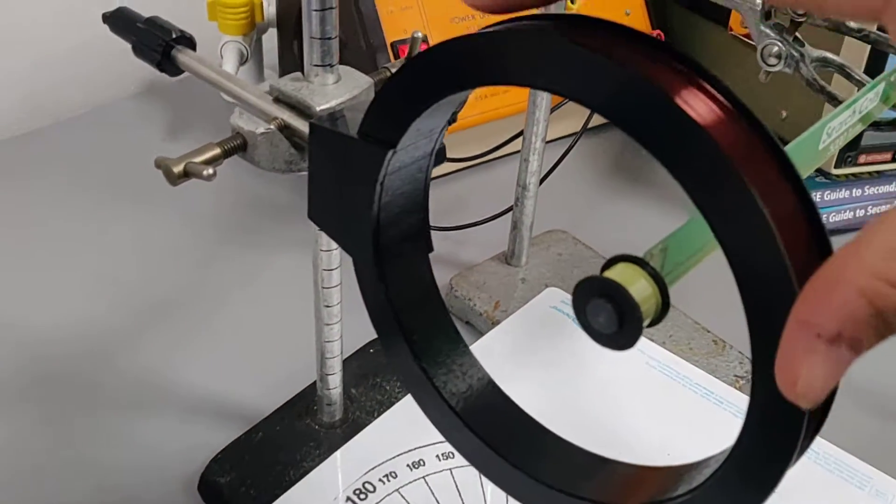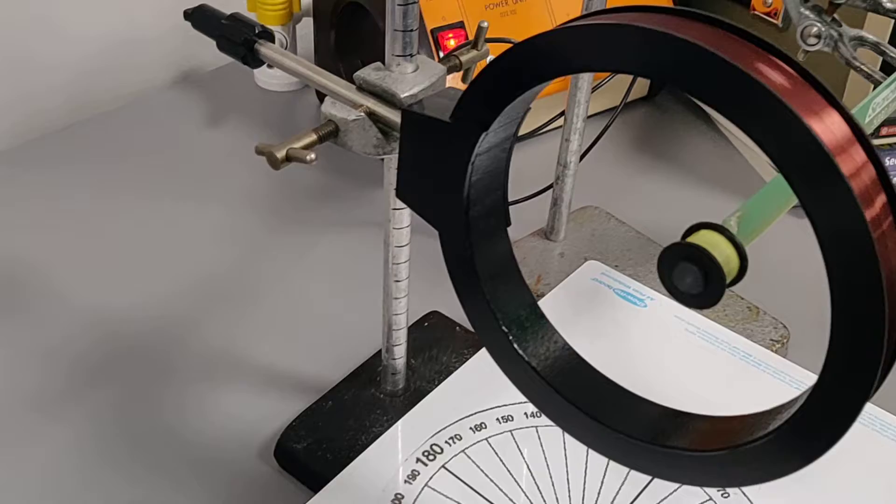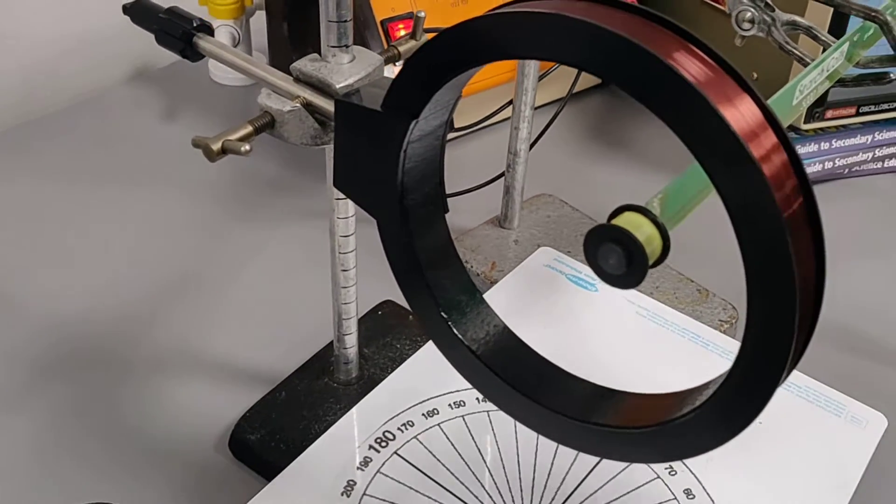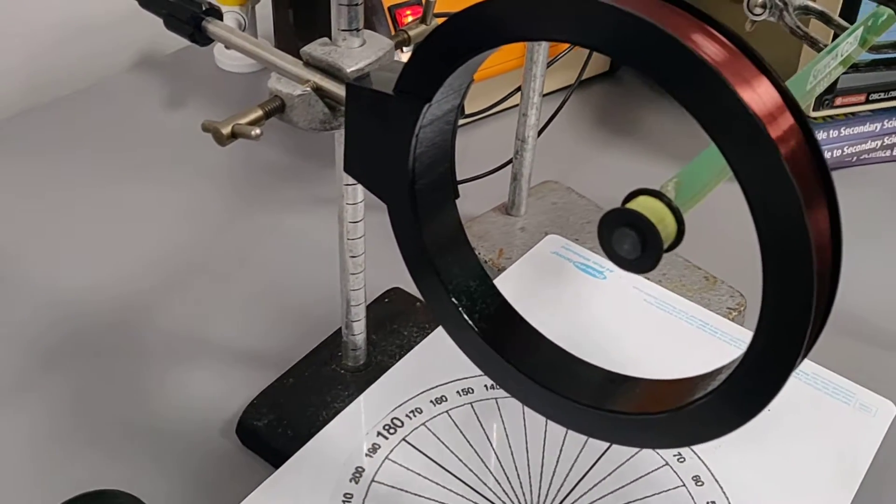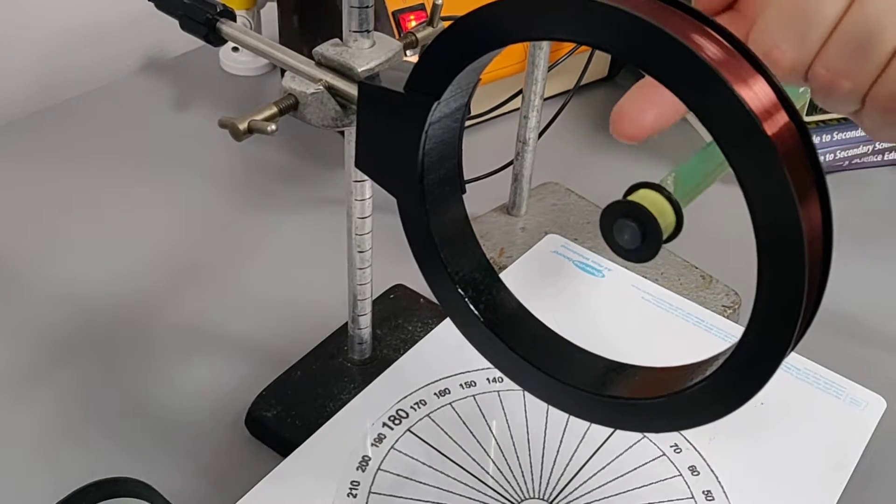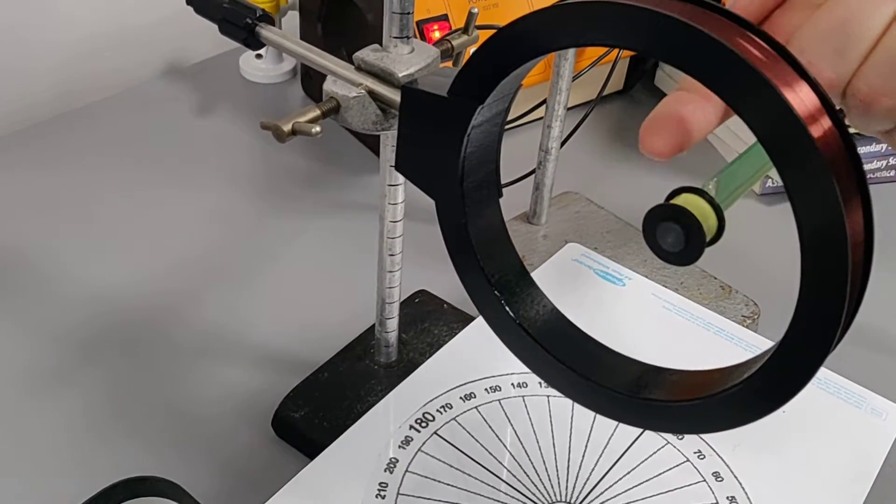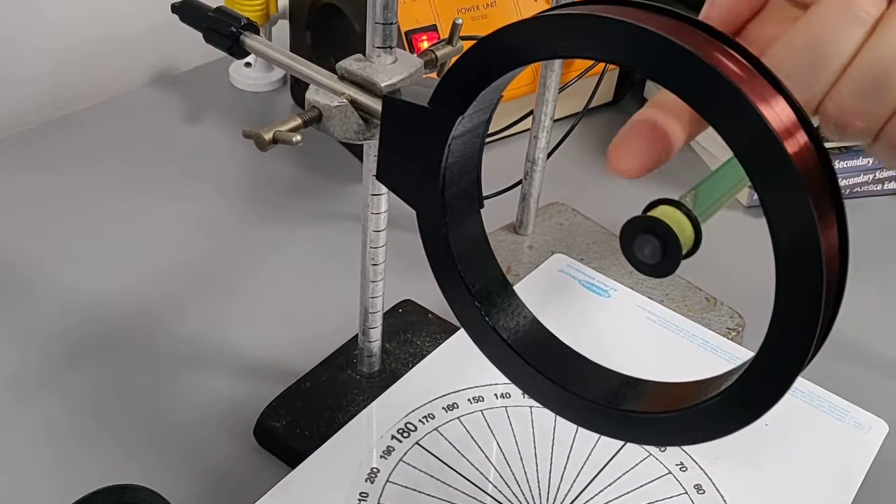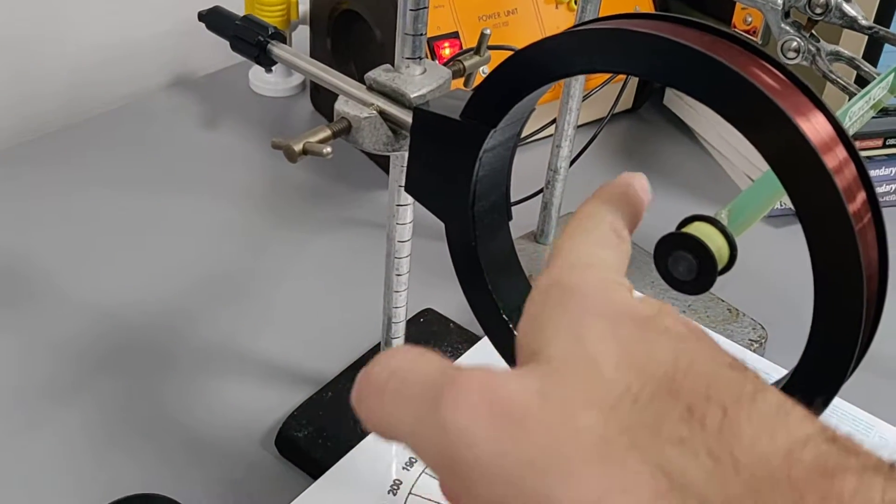So the special thing about a coil of wire like this is that the magnetic field through it, the magnetic field caused by the current moving, is uniform in the middle. So it's either pointing in the direction of my finger, going that way, or when the current switches direction, it's pointing the other way, going that way.